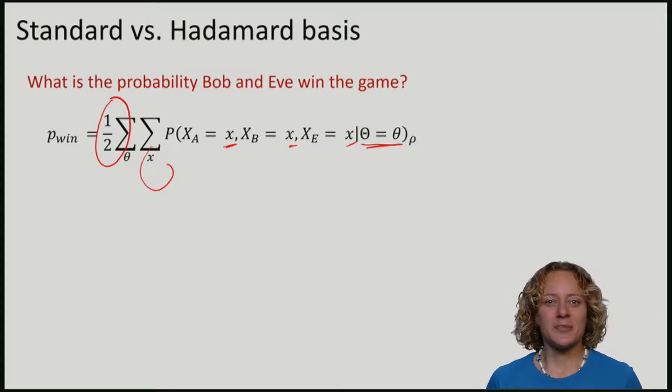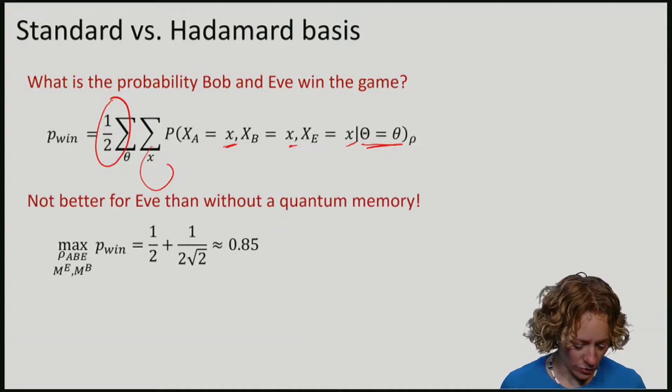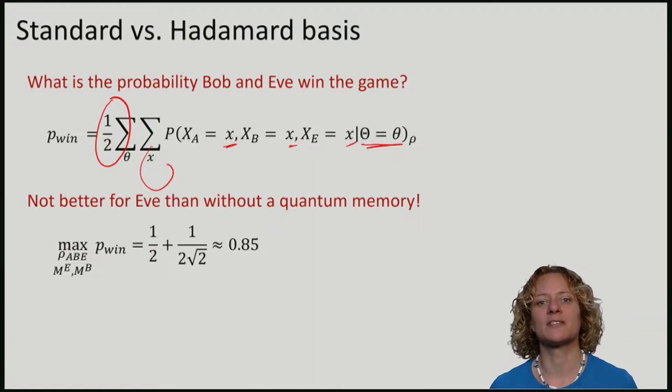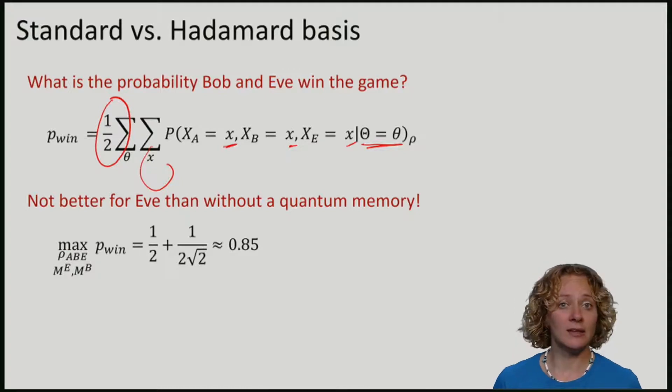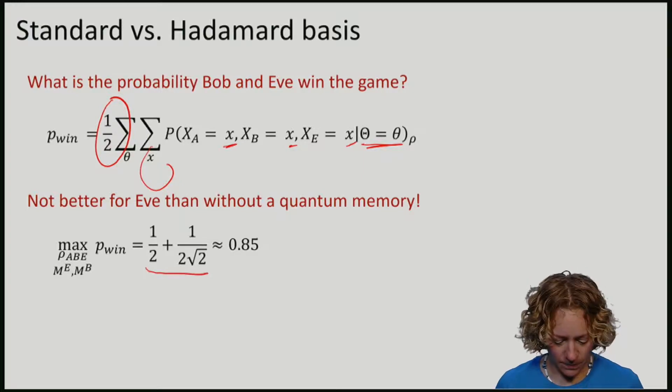It shows that in fact the best winning probability, maximized over all states ρ_ABE, and maximized over all measurements that Eve and Bob might perform, that this winning probability is never larger than this number, namely, roughly 0.85.